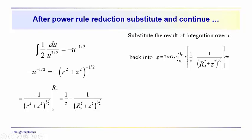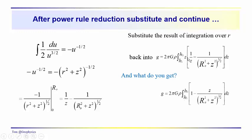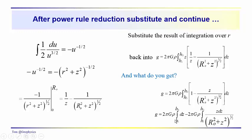Now we have the integral of z dz to deal with, along with these two additional terms. Multiplying through by z, our integrand becomes 1 minus z over (R₀² + z²)^(1/2). Distributing the integration, we have 2πGρ times the integral of dz, minus 2πGρ times the integral from h1 to h2 of z dz over (R₀² + z²)^(1/2). We've just distributed the integration through this difference of terms.